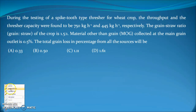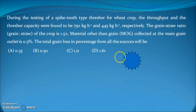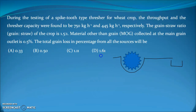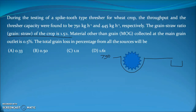Let us solve this. We have drawn the spike-tooth thresher. The input enters through the cylinder, passes through the sieves, and grain is taken at the output. So 750 kg is the input. The grain-to-straw ratio is 1.5:1, meaning out of 2.5 kg, 1.5 kg is grain. So out of 750 kg, the grain content will be 750 × 1.5 / 2.5 = 450 kg.